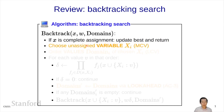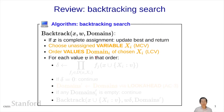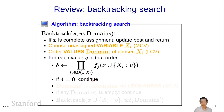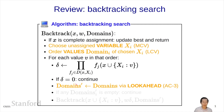Otherwise, we're going to choose an unassigned variable xi. We're going to look at all the values in the domain of xi and order them according to some heuristic, LCV. We're going to step through each of the values v in that order, and compute the weight update based on xi being set to v. And if this is zero, then we can just stop recursing right there. Otherwise, we're going to use this updated assignment as an input into the look-ahead algorithm to reduce the domains. And now if any of the domains become empty, then again we stop recursing. Otherwise, we recurse.